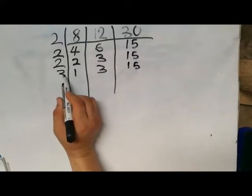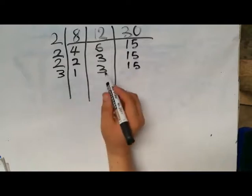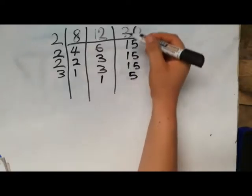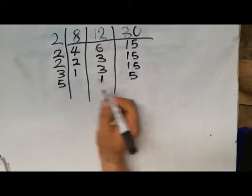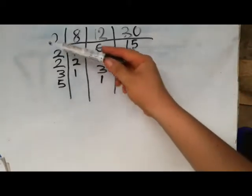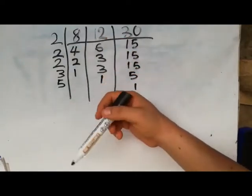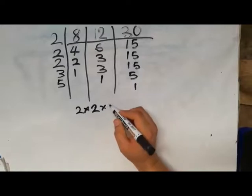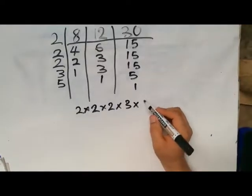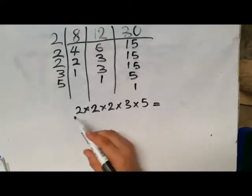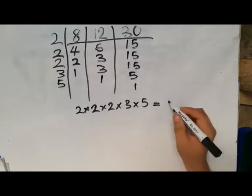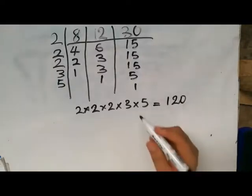The next number we can use is 3. 3 into 1 — this is already 1, complete, no need to divide. 3 into 3 is 1. 3 into 15 is 5. Only the last column hasn't reached 1, so we use 5. 5 into 5 is 1. To get the LCM, we multiply all the divisors we used: 2 times 2 times 2 times 3 times 5. That gives: 2 times 2 is 4; 4 times 2 is 8; 8 times 3 is 24; 24 times 5 is 120.